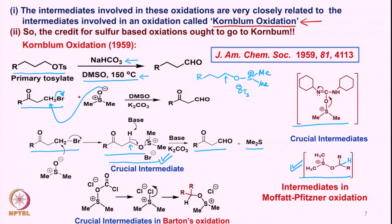This particular intermediate is similar to the intermediate shown in Barton's oxidation. So both in Barton's oxidation and Moffatt-Pfitzner oxidation, the last intermediate is very similar to the intermediate formed in Kornblum oxidation — except that in Kornblum oxidation the intermediate directly comes with the oxygen, since DMSO acts only as a nucleophile. Whereas in Moffatt-Pfitzner and Barton's oxidation, we activate DMSO to form electrophilic sulfur, to which alcohol attacks.